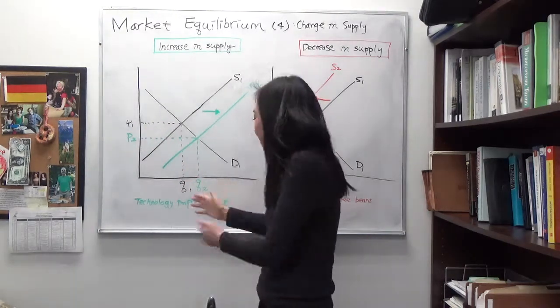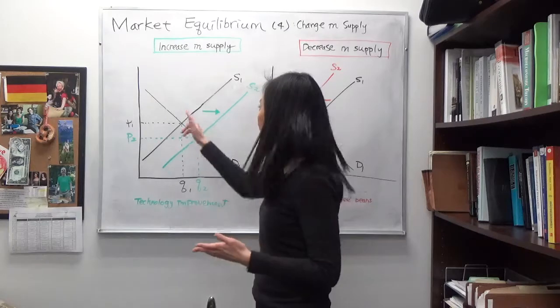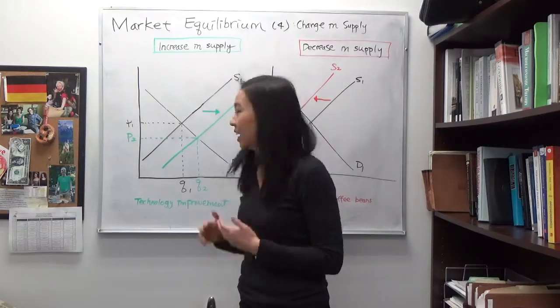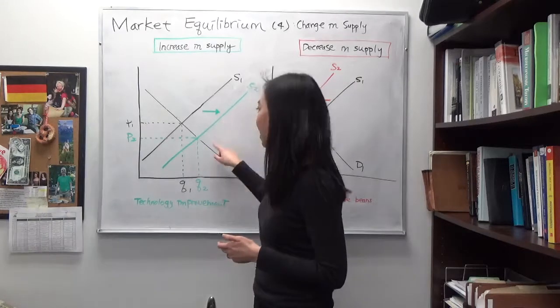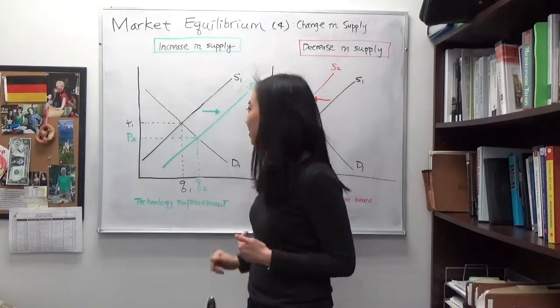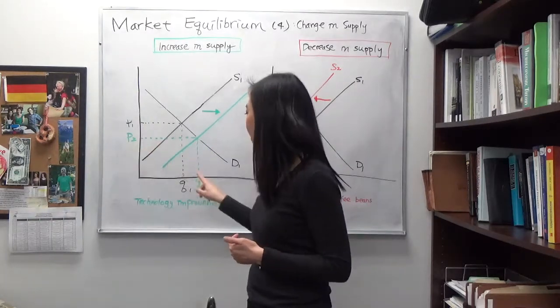And now after the technology improvement, that will shift our supply curve to the right, and that will give you a new intersection of the new supply curve and the original demand curve. So you will have a new price and new quantity.